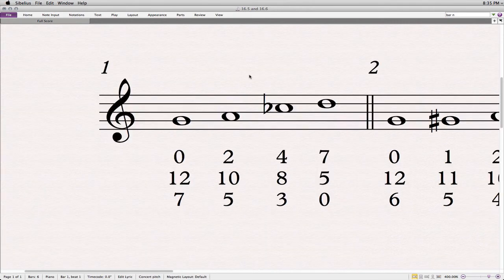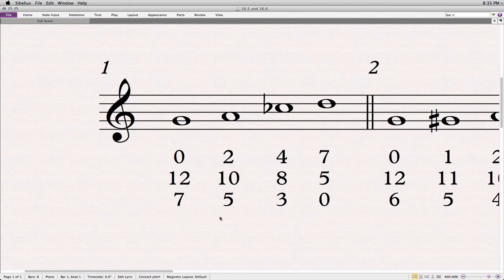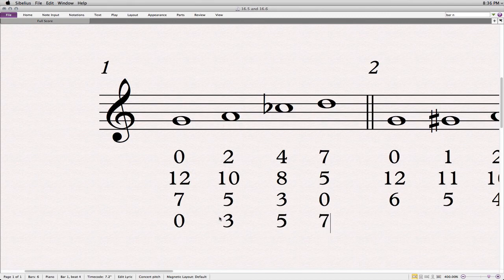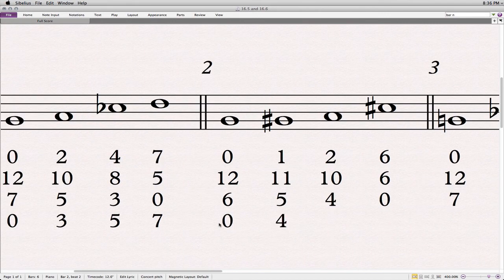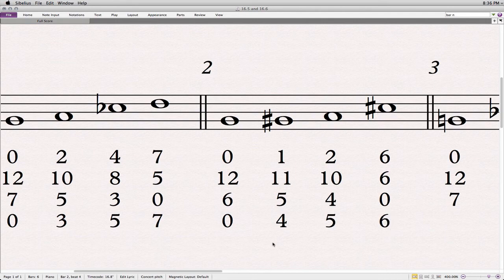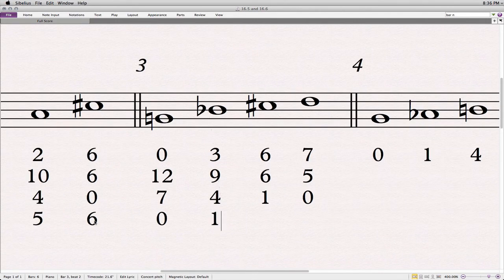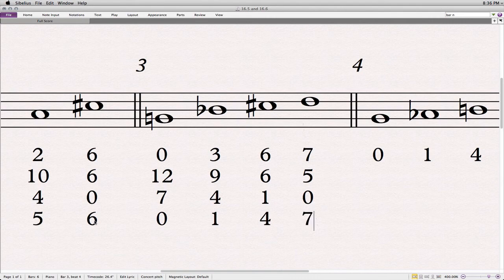Now let's put them in order starting from left to right with the smallest numbers here. Let's reverse their order here. 0, 3, 5, 7, 0, 4, 5, 6, 0, 1, 4, 7.